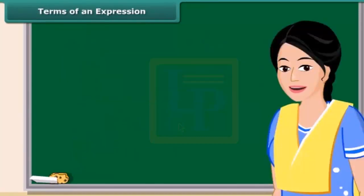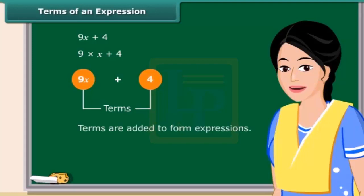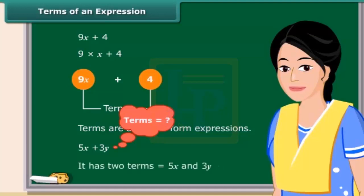Now we will discuss what terms of an expression and their factors are. Consider the expression 9x plus 4. In forming this expression, we first formed 9x separately as a product of 9 and x and then added 4 to it. So, you have seen these expressions have parts which are formed separately and then added. We call these parts as terms. That means terms are added to form expressions. How many terms are there in 5x plus 3y? That's right. It has two terms.